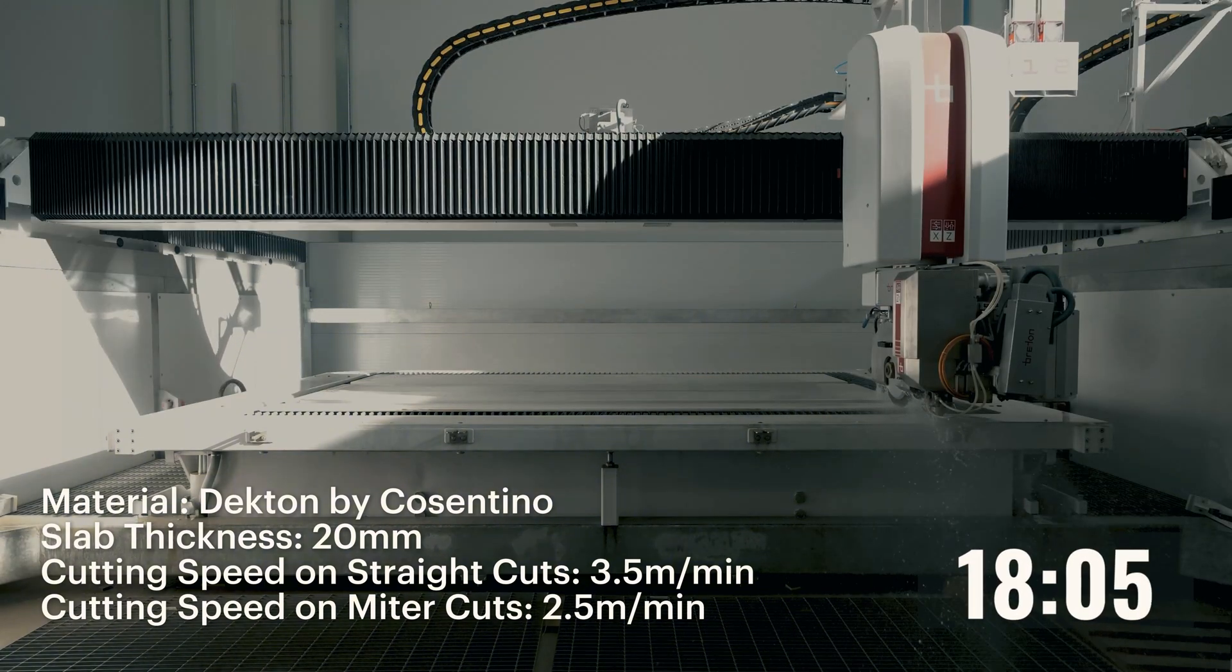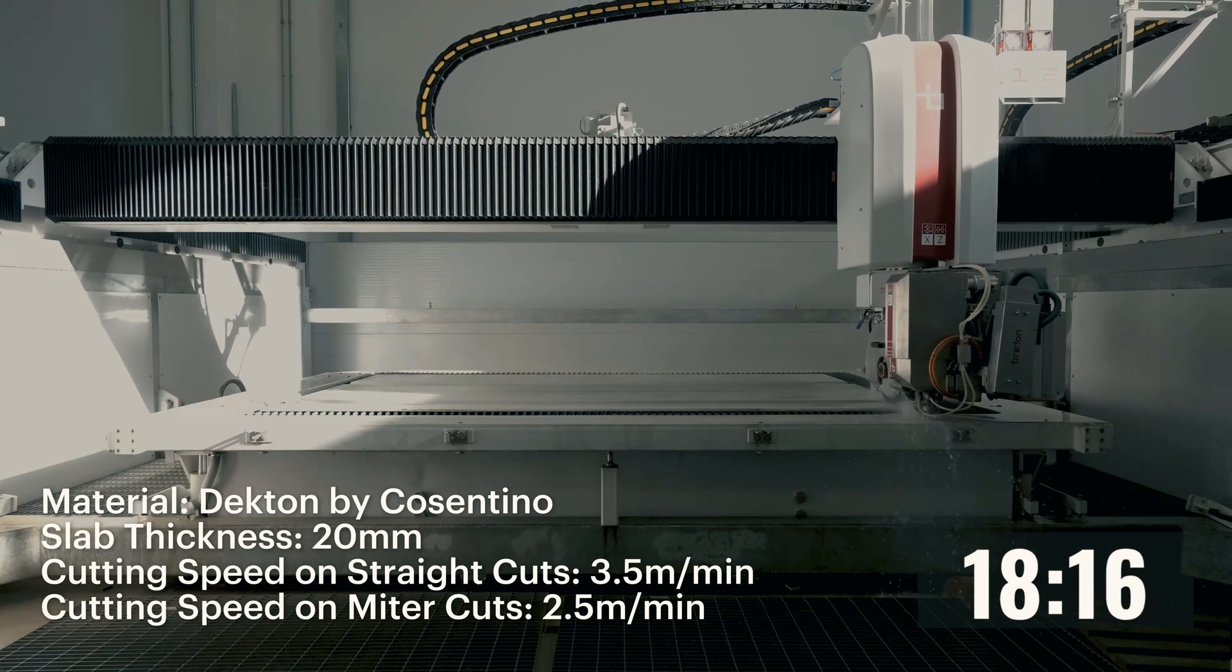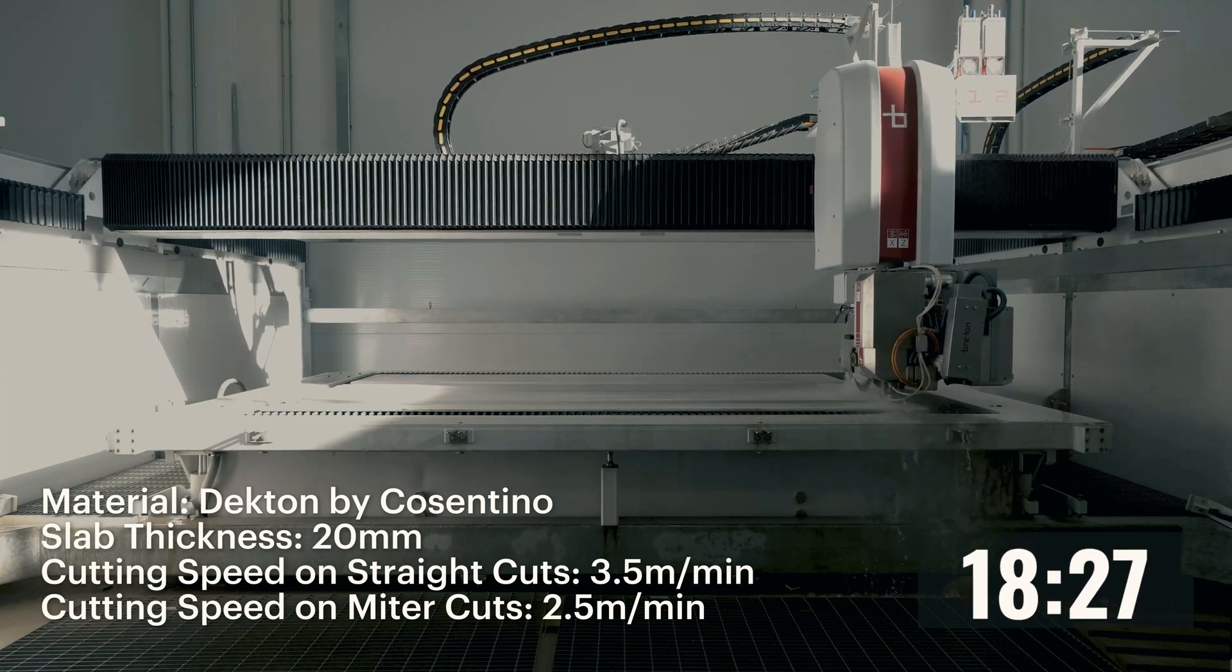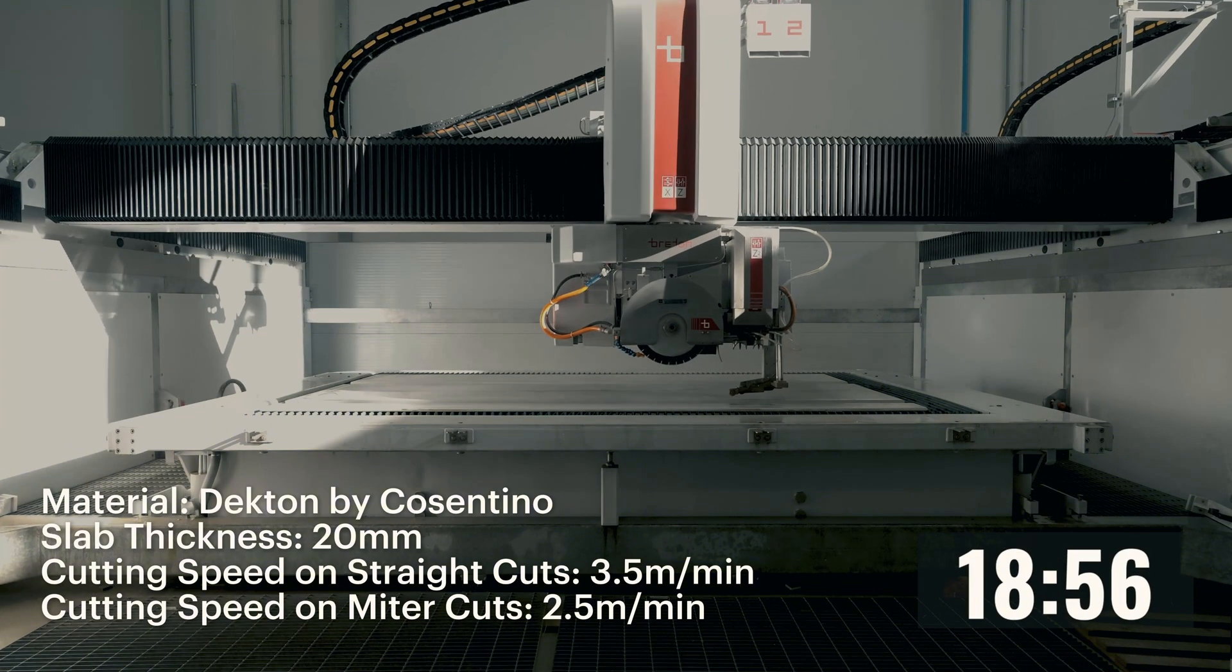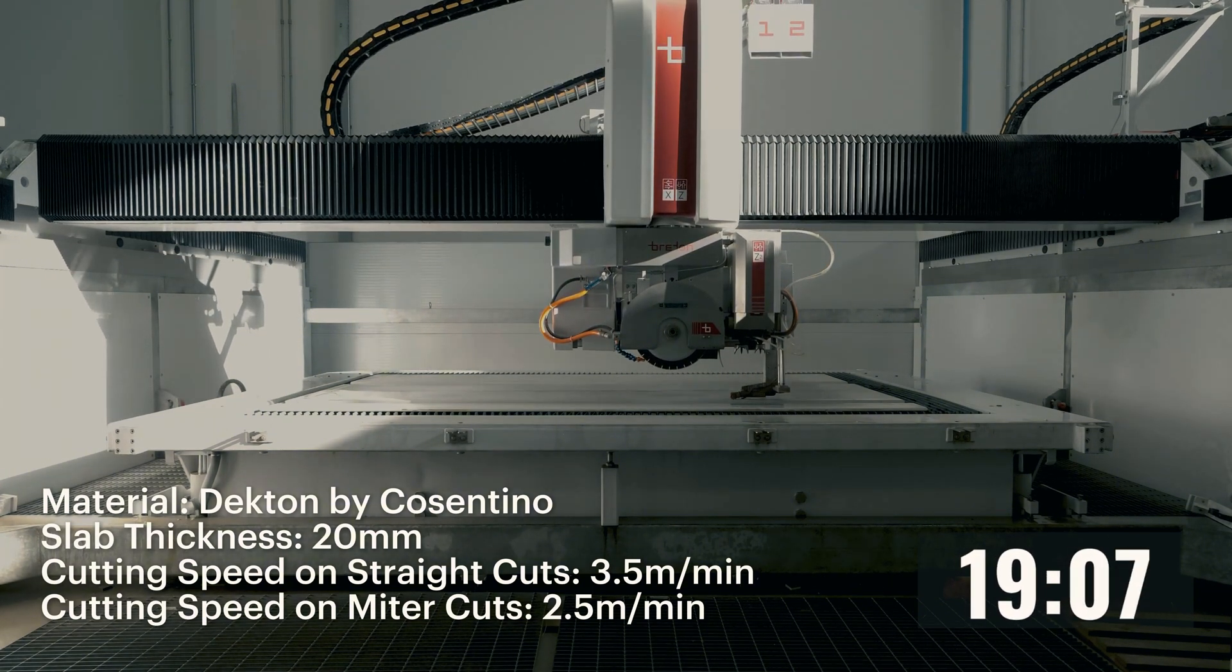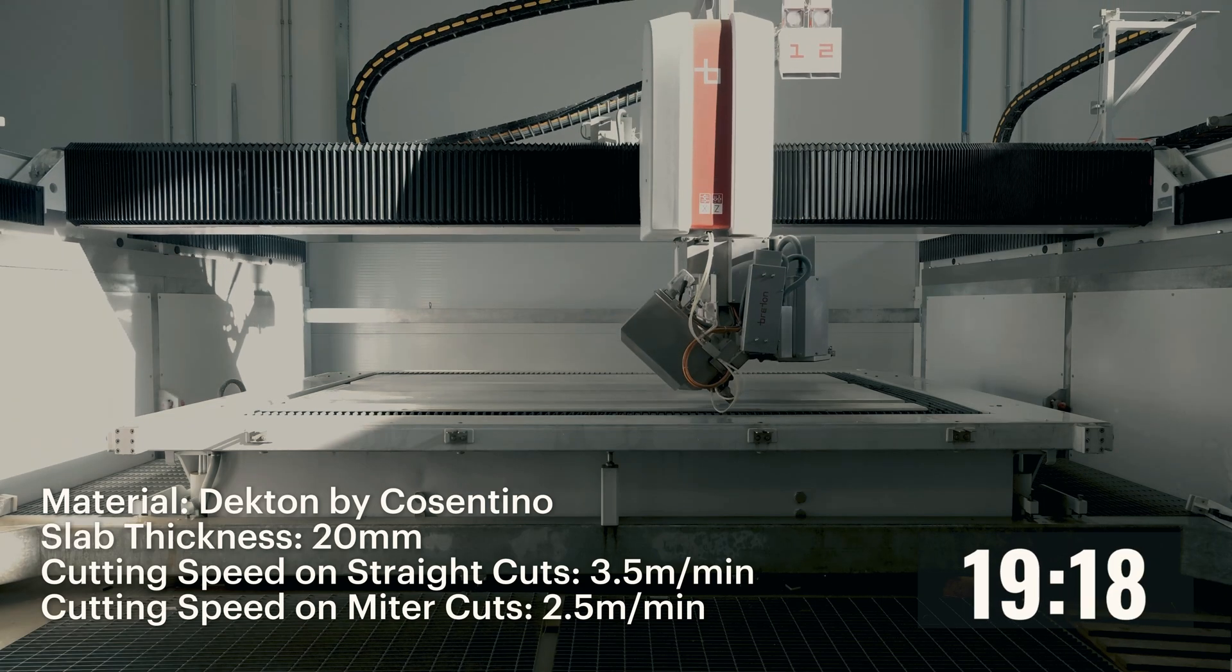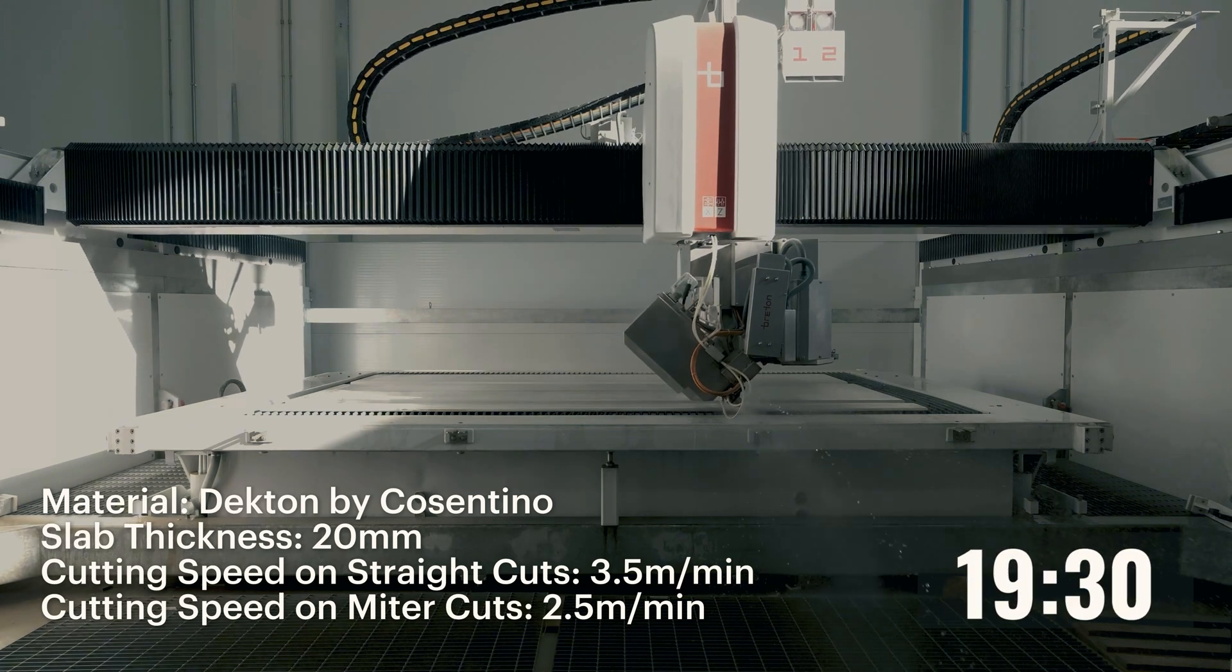But also acts as an intelligent agent that autonomously applies the most appropriate cutting strategy for the slab. With Sapiens, once the type of material is specified, the machine automatically applies all the necessary measures to achieve the best result in the shortest time.